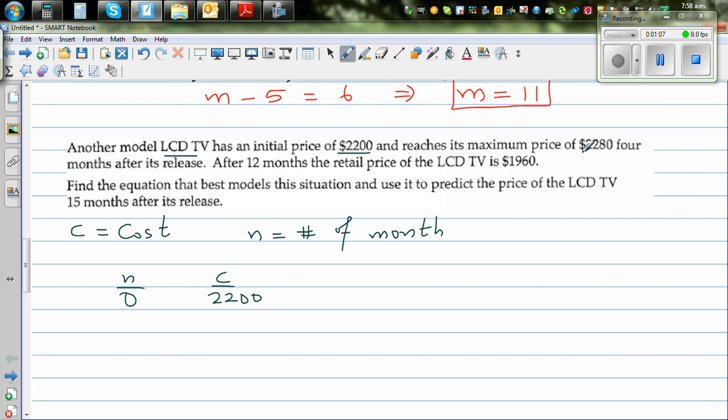It reaches its maximum of $2,280 four months after its release. So when N is 4, you reach the maximum of $2,280. Now this is your maximum. After 12 months, the retail price of the LCD is $1,960. Can you see it has dropped down? So the question is, find the equation that best models this situation and use this to predict the price of the LCD TV 15 months after the release.